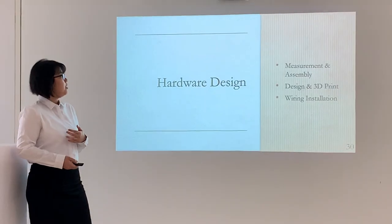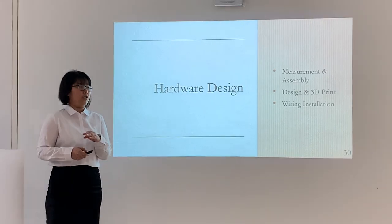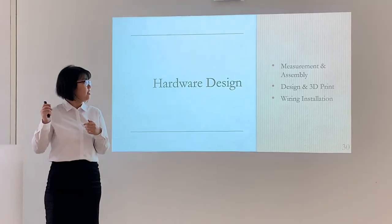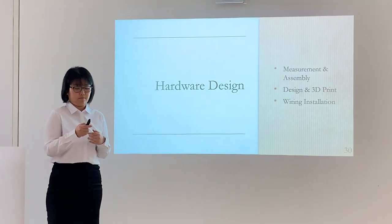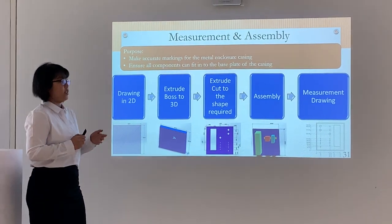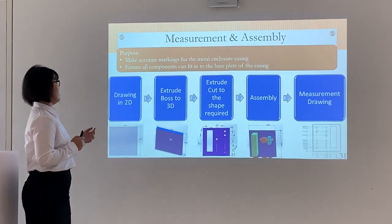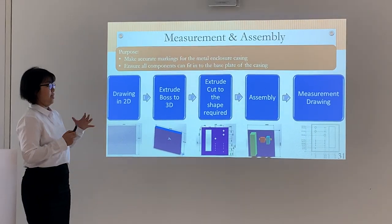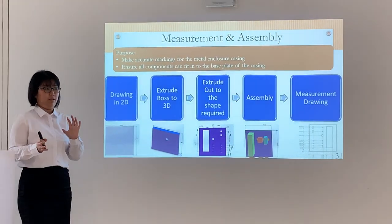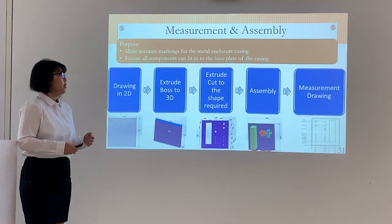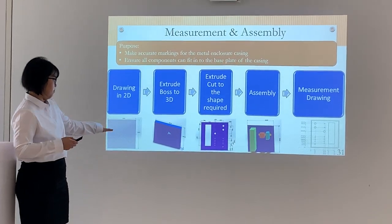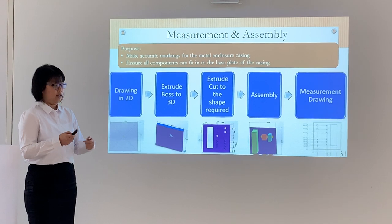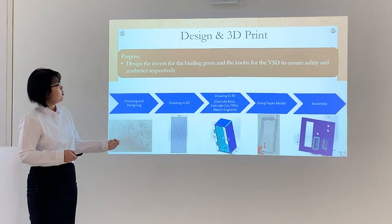I'll talk about the hardware design. The hardware design will be split into three sections. The first is the measurement and marking to make accurate markings for the metal enclosure casing and ensure components can fit into the metal base plate. The metal box was fabricated from scratch, and these are the pictures of the process.